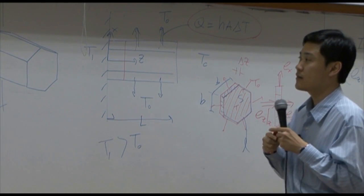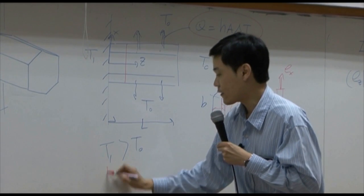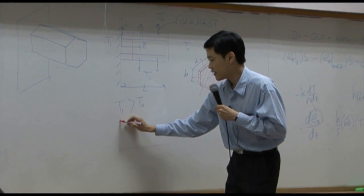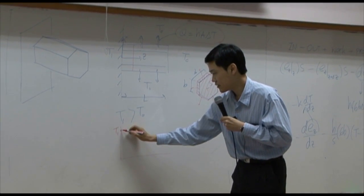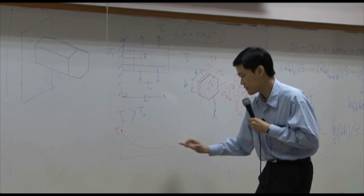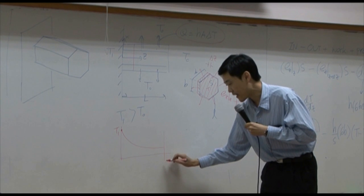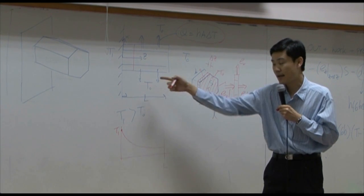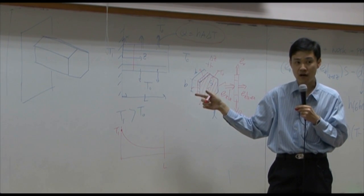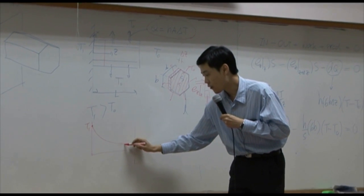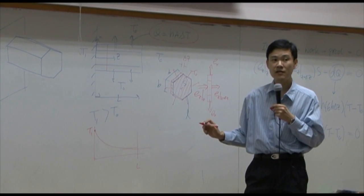If you plot temperature profile according to the length, up here is T1, the temperature would be decreased. If you assume that at length L, if the length L here is very, very long, then the slope here is supposed to be zero.